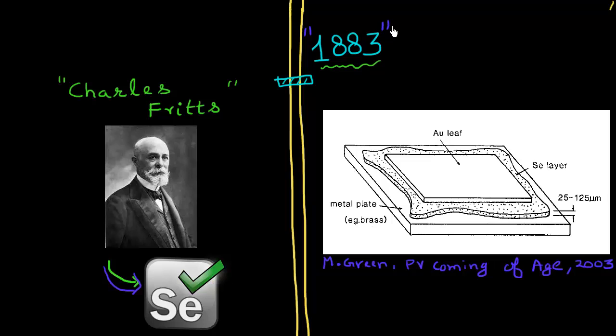Remember this is 1883 and the processing technology for silicon hasn't been developed yet. So the way Charles Fritts designed his experiments was, he sandwiched a thin layer of selenium between two different metals of two different work functions. So he chose, he took a metal plate, which was made for example of brass. And then he placed this sheet of selenium, which was in thickness between 25 to 100 to 125 micron. And then on the top, he basically placed this very thin sheet of gold on the top. And when he then subsequently shone light on top of this device, you could measure photovoltaic effect. And you could in fact extract a reasonable amount of electrical energy out of this solar cell.